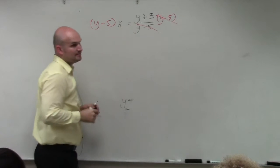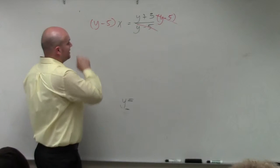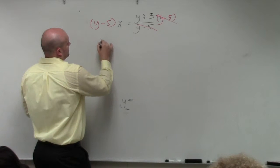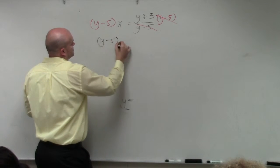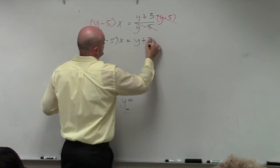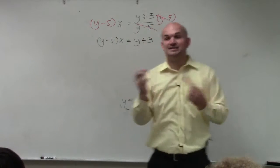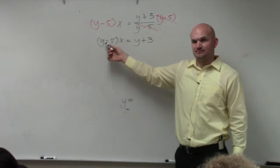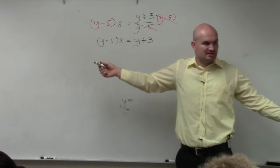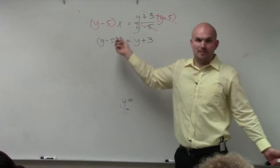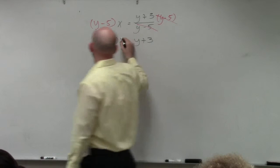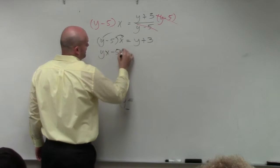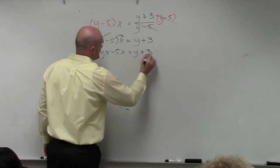By the division property, those divide out. And therefore, I'm left with y minus 5 times x equals y plus 3. Now, I can't solve for y when it's inside of a parentheses. So how do I get rid of the parentheses? I can apply the operation that the parentheses is being used for, which is the distributive property. So now I have yx minus 5x equals y plus 3.